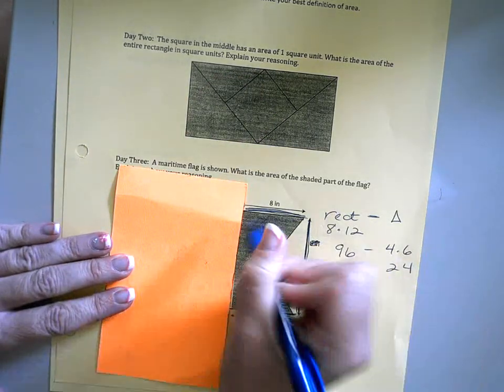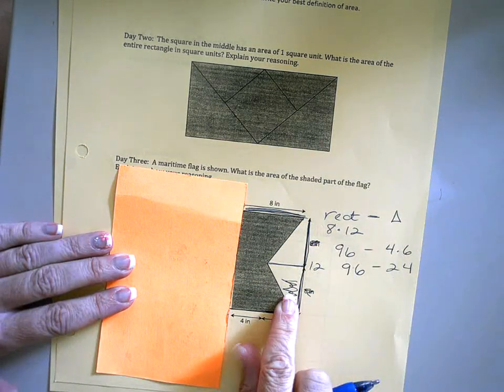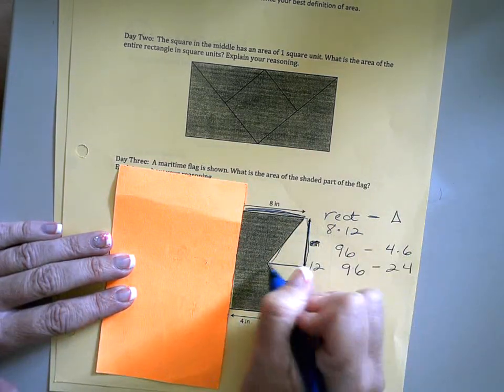So we're gonna subtract 96, which is that whole rectangle, minus 24, which is this space that we're not gonna need.